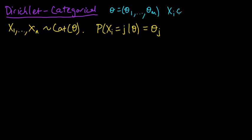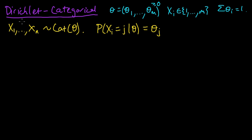So xi takes values in some finite set, let's call it 1 to m. These thetas represent the probability that xi takes that particular value — each of them is non-negative and they sum to 1, just a little PMF. These x's are conditionally independent given theta.